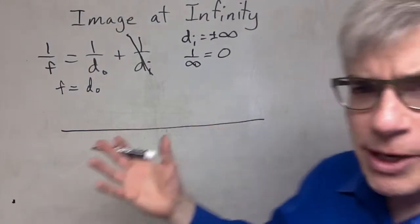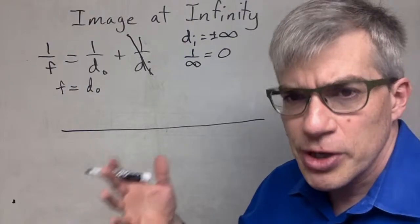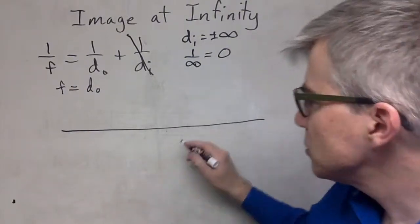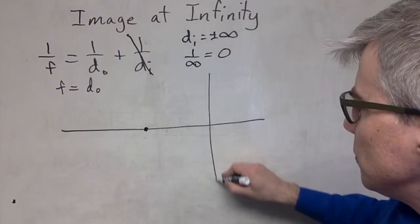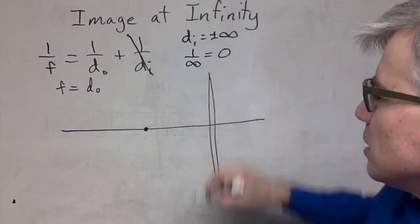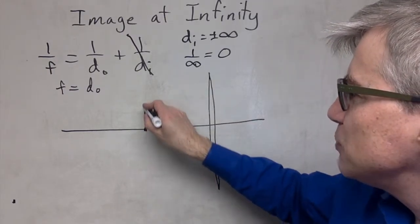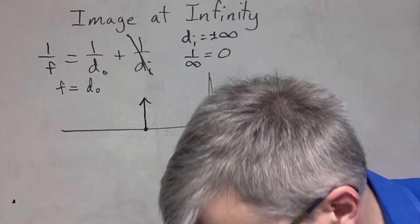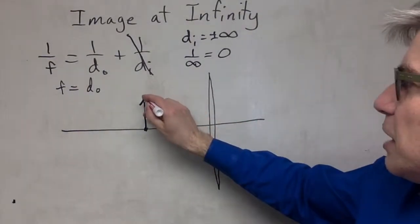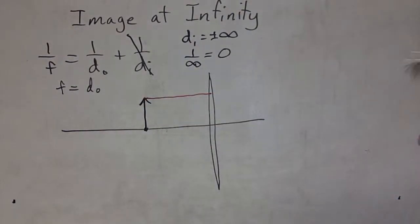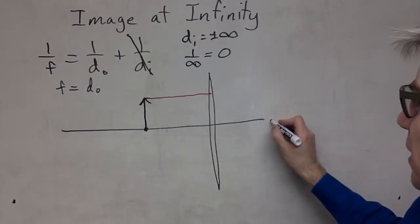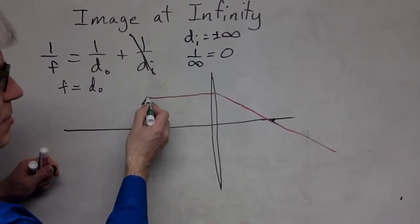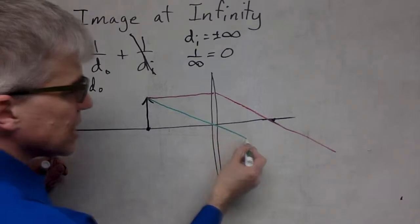So the ray diagram doesn't quite work, right? We're used to drawing three beams, but you can only get two out of this. If this is the lens and its focal point, and you put the object here, what are we going to see? We're going to see a beam parallel that then goes through the focal point on the other side. Then we're also going to see a beam that goes through the center of the lens like a window.